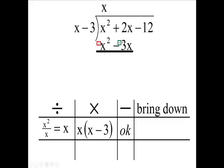So we're adding the opposite. When we add, we get 2x and 3x, which is 5x, and then we're going to bring down the 12.